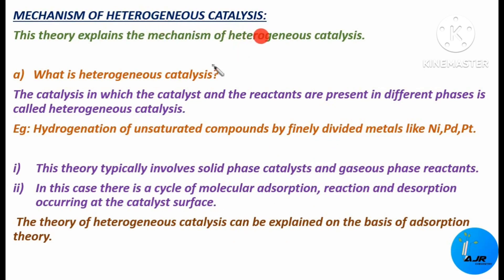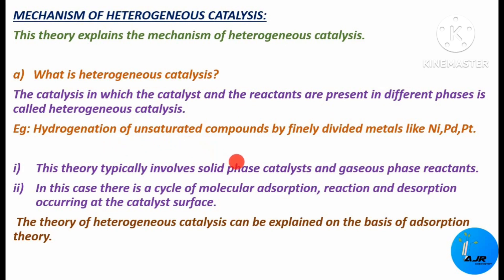Before going into the topic, you should know what is heterogeneous catalysis. Catalysis in which the catalyst and the reactants are present in different phases is called heterogeneous catalysis. A good example is hydrogenation of unsaturated compounds by finely divided metals like nickel, palladium, platinum, etc. These are the catalysts and they exist in solid state.